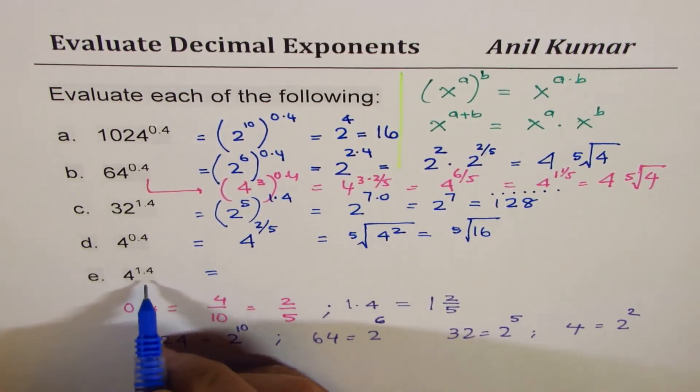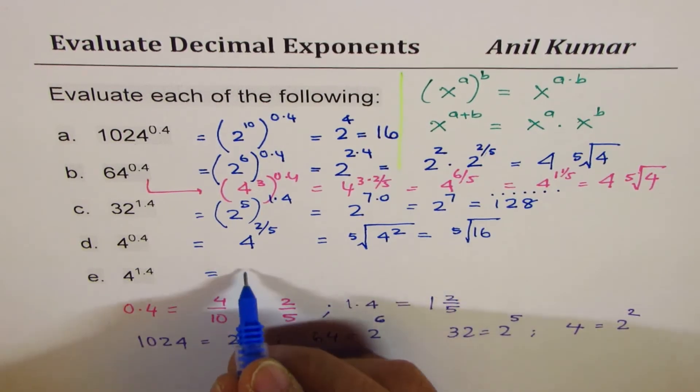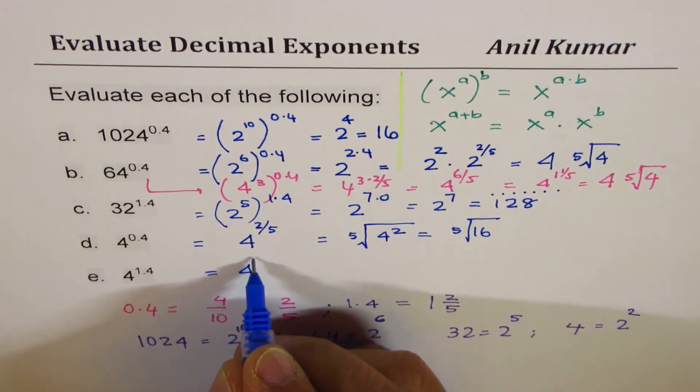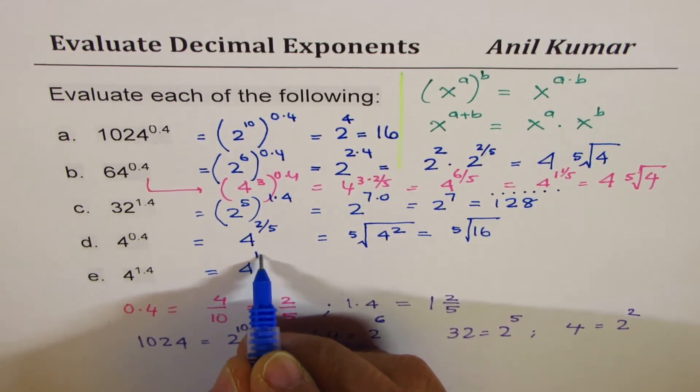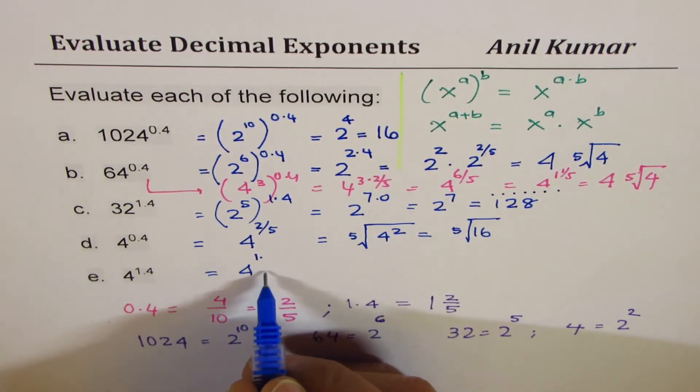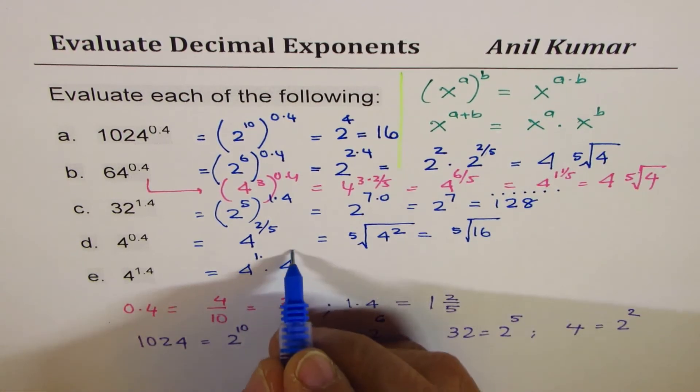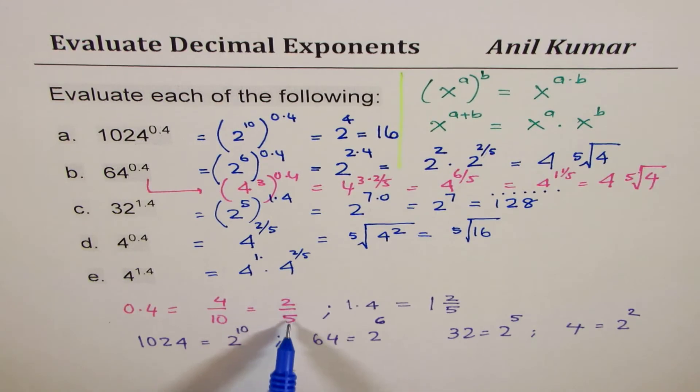Now if you have 4 to the power of 1.4, that means just one more 4 in the exterior of this. But you could also do like this. 1.4 will mean 1 point. Now when I say 0.4, you can think about writing this 0.4 as 2 over 5. So 1 whole times 4 to the power of 2 over 5. Does it make sense? Since 0.4 is 2 over 5.